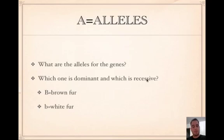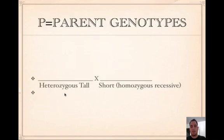The next step is to find the alleles — which one is dominant and which one is recessive. So you find the capital letter and the lowercase letter, and designate your alleles. Then figure out the parent genotypes by reading the problem. For example, a heterozygous tall crossed with a short parent: heterozygous tall would be big T little t, and short would be little t little t.